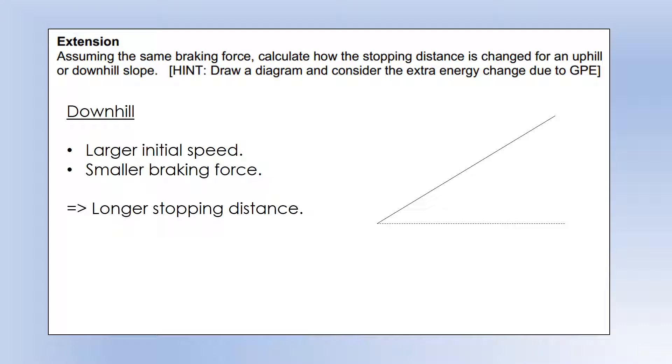Downhill would be completely the opposite, you'd have a higher initial speed, a smaller braking force, because remember the weight force is acting to accelerate the bike, the friction is against it, so we've got an overall smaller braking force, giving you a longer stopping distance.